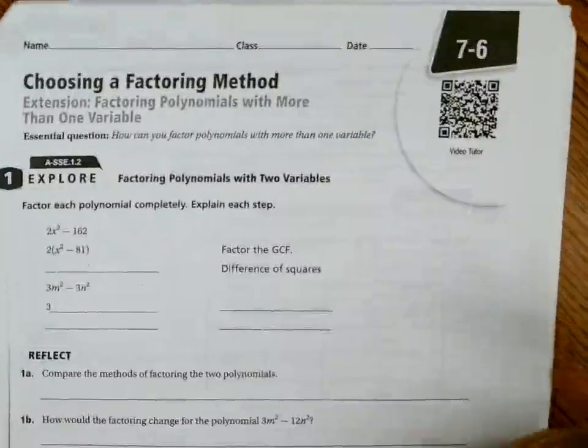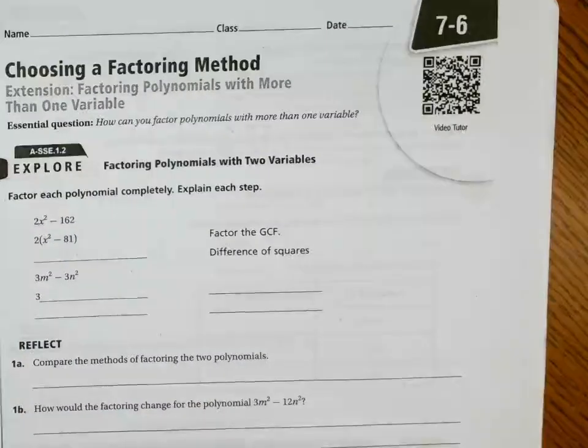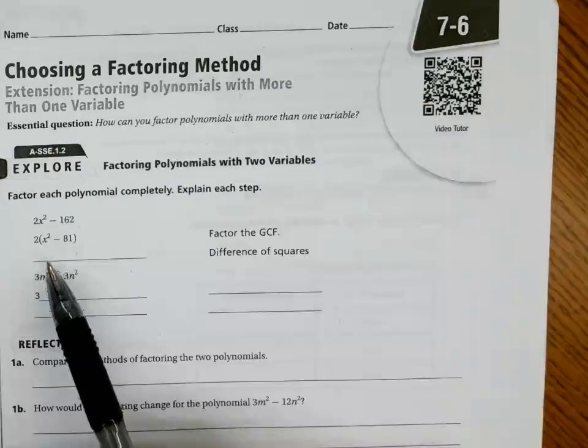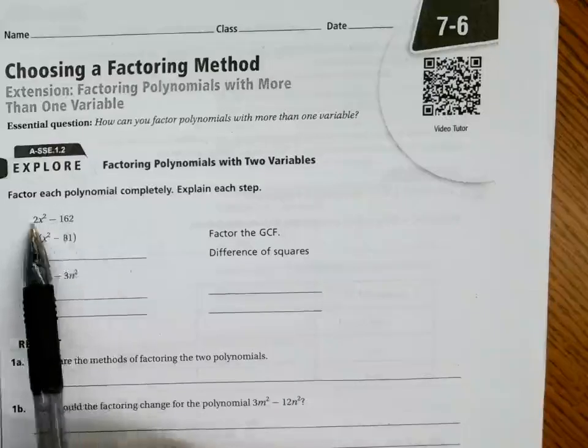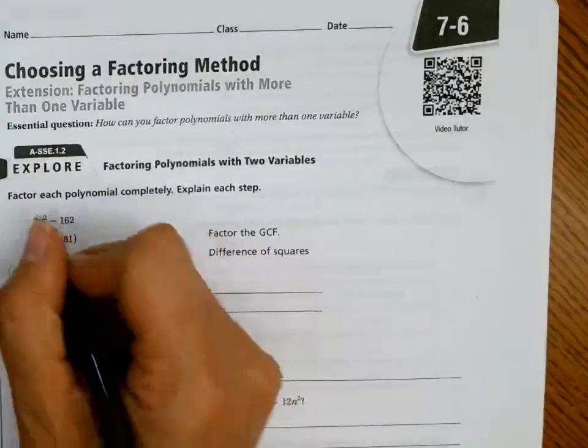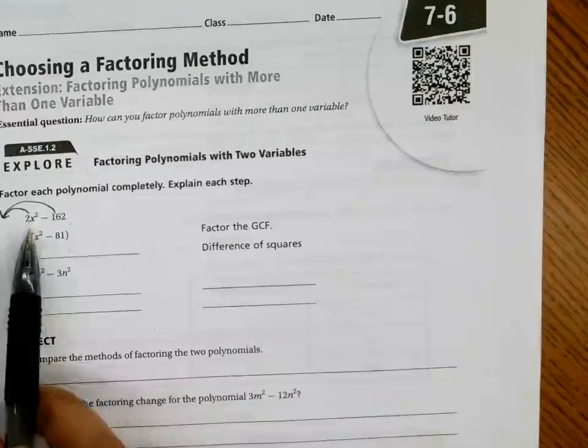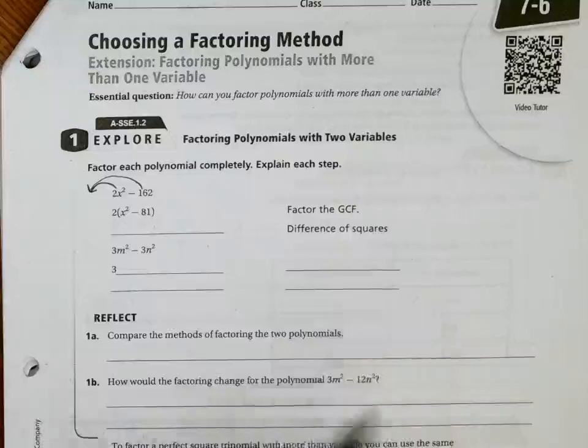Alright guys, so we're going to factor each polynomial completely and explain each step. If you're given 2x squared minus 162, we're going to take out our greatest common factor of 2, because 2 is in common with both of them, so we're pulling out that 2.